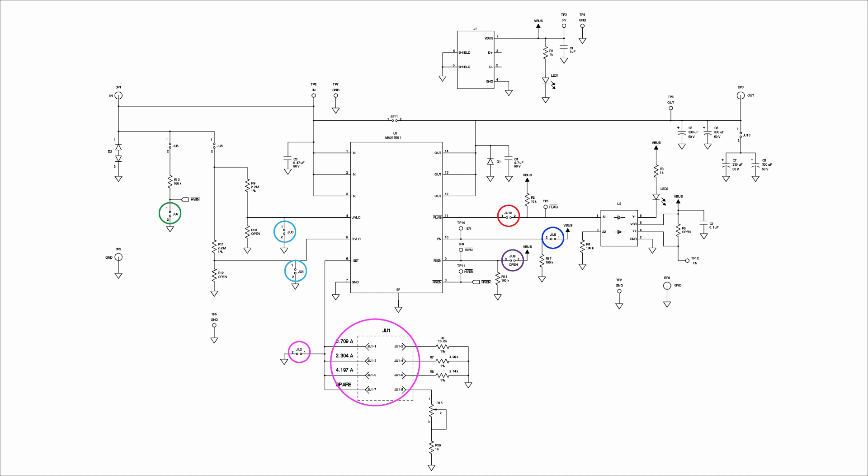TP-3 is also V-bus from the onboard USB port. This rail powers the flag status LED and enables the MAX17561.